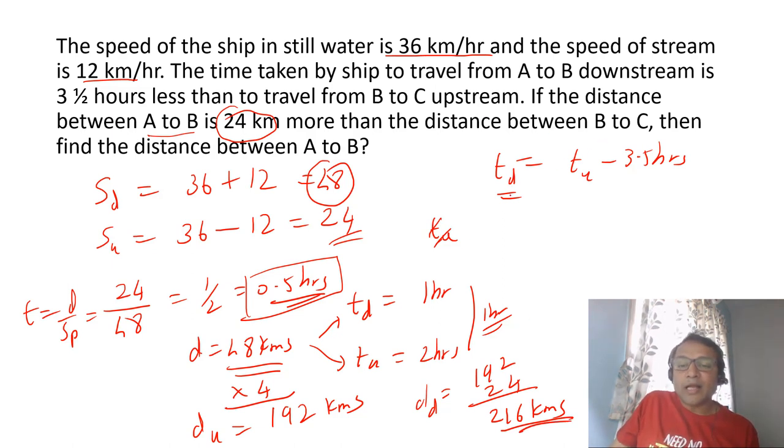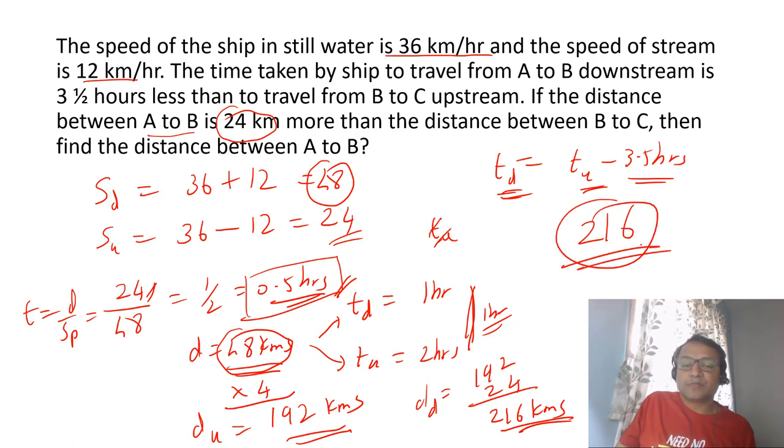I repeat again. He actually has to take downstream time three and a half hours less as compared to upstream, but a 24 kilometer extra takes him half an hour extra. That means the remaining distance, which is equal distance for the boat, the downstream time has to be four hours less than the upstream time. So in 48 kilometers, the difference is one hour. To make the difference as four hours, you have to multiply by four to get 192 kilometers. So that is the upstream distance. Downstream it covers 24 kilometers extra, which is 216 kilometers. Hope it's clear.